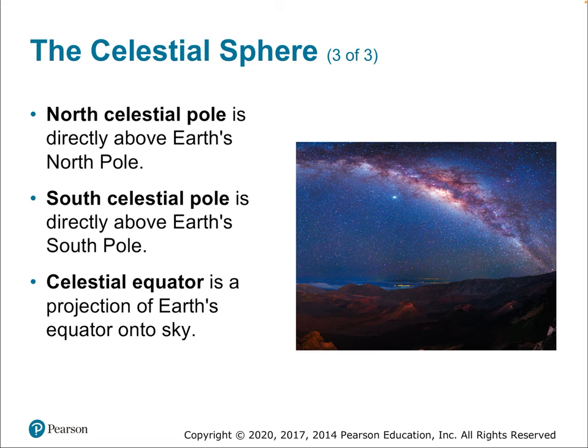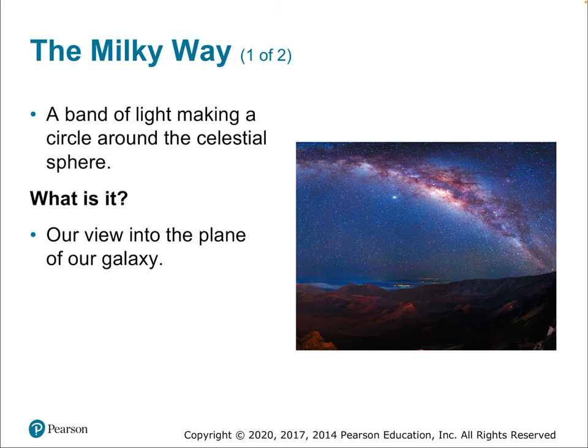Other important parts of the celestial sphere: the North Celestial Pole is directly above Earth's North Pole; the South Celestial Pole is directly above Earth's South Pole; and the Celestial Equator is directly above Earth's equator — a projection of Earth's equator onto the celestial sphere.